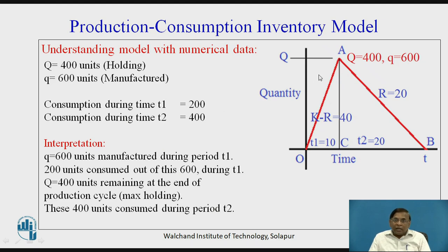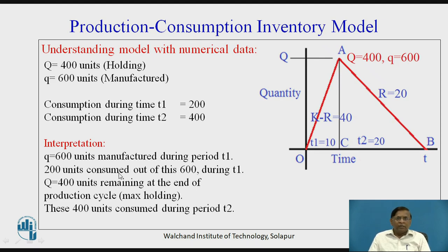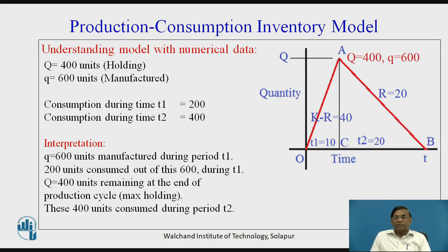From point O to A, we are producing as well as consuming. From point A to B, we are only consuming the quantity held at 400 units. Hence the name: production consumption inventory model. In T1, we consume 200 units; in T2, the held 400 units are consumed down to zero at point B. Then the same cycle repeats.